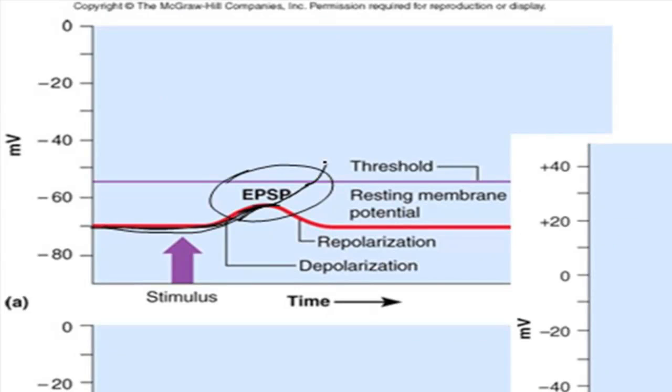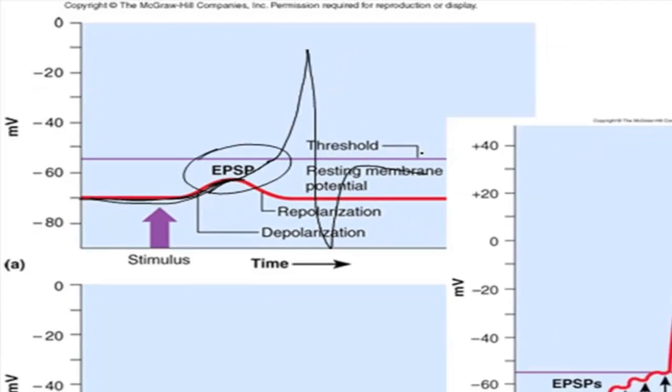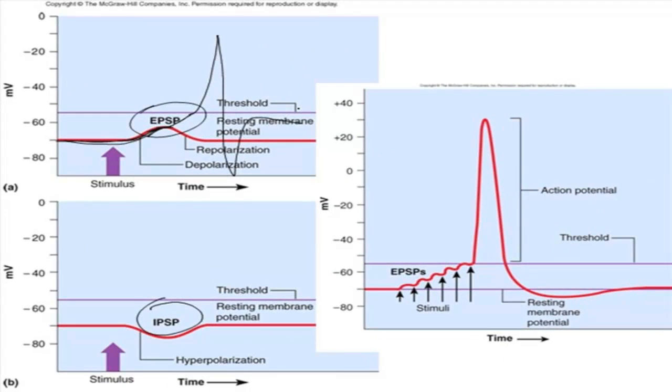If the EPSP is big enough, it will go all the way to threshold and generate an action potential, just like we saw before. So there are three possible results from a chemical synapse. You can excite the membrane, but not enough for an action potential. That's called an EPSP, or an excitatory postsynaptic potential. You can inhibit the postsynaptic potential by making it more negative, hyperpolarizing it. That's called an IPSP, or you can depolarize the membrane to threshold and result in an action potential and continue the nerve impulse to the next level.